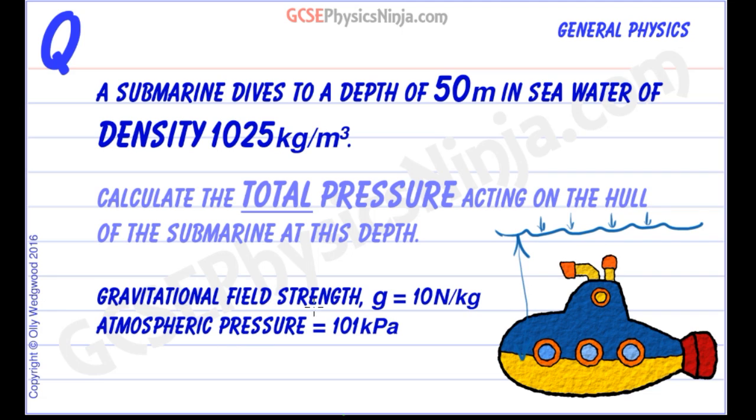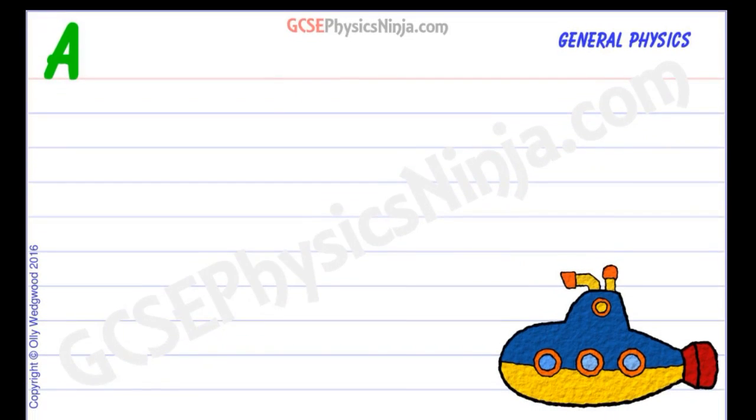So we know the gravitational field strength is g, 10 newtons per kilogram, and the atmospheric pressure up here is 101 kilopascals. So let's set up a calculation and see if we can work out the total pressure on the hull.